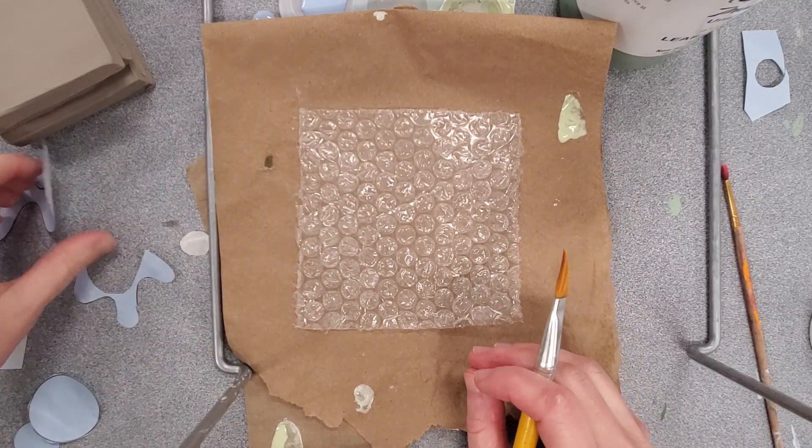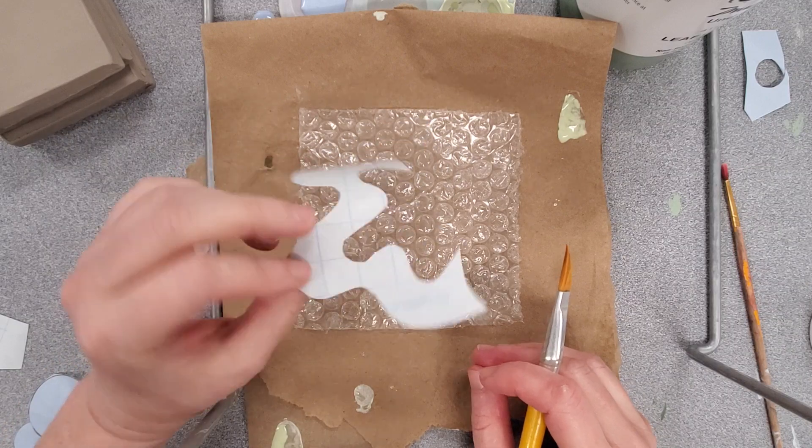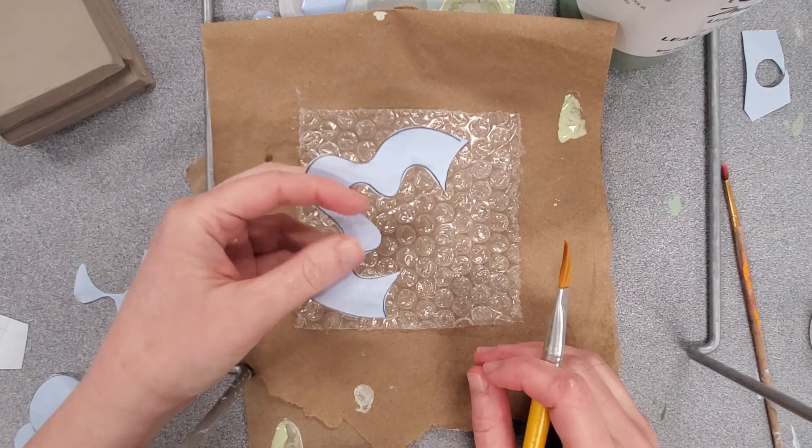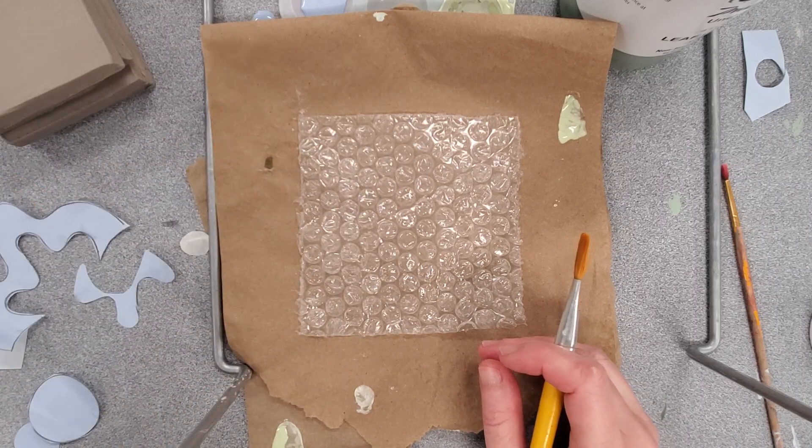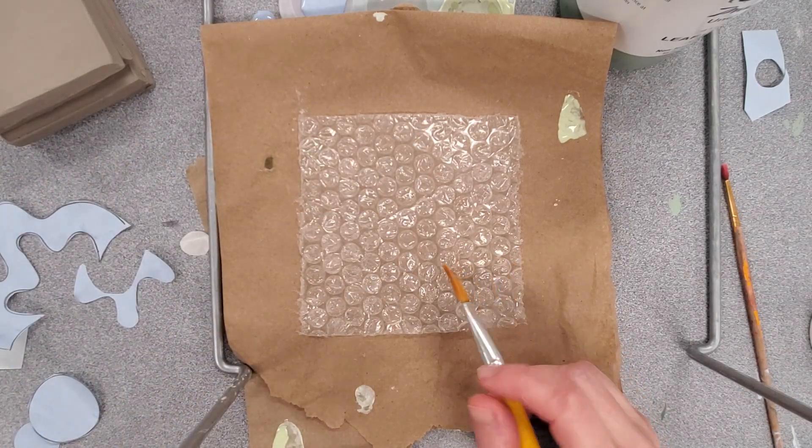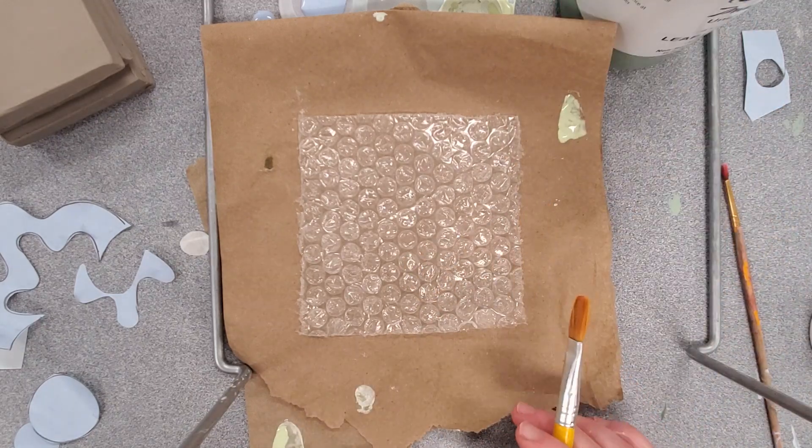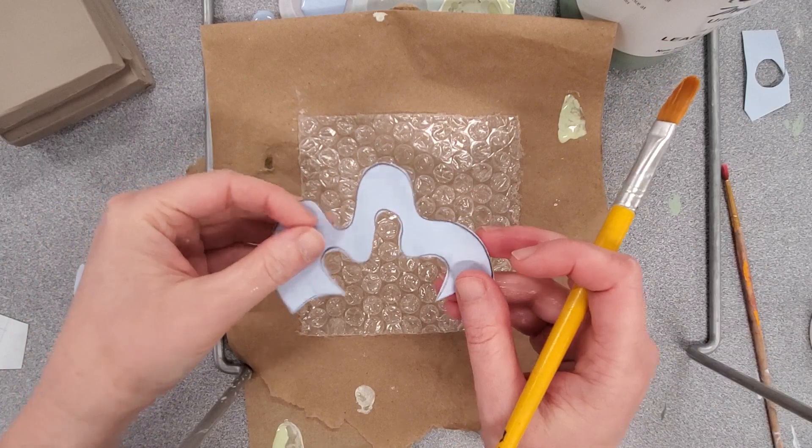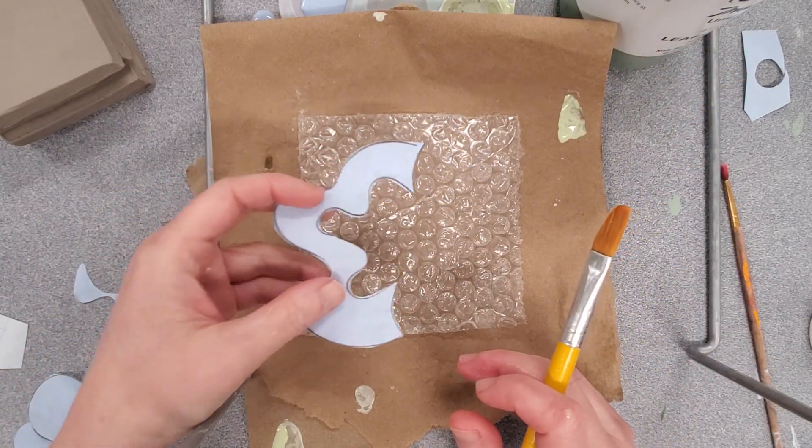Then we're going to use contact paper that's got a sticky side to create shapes or a silhouette of something. We're going to place that on our bisque tile, underglaze over it, and wherever we put the contact paper shapes will remain this textured color.